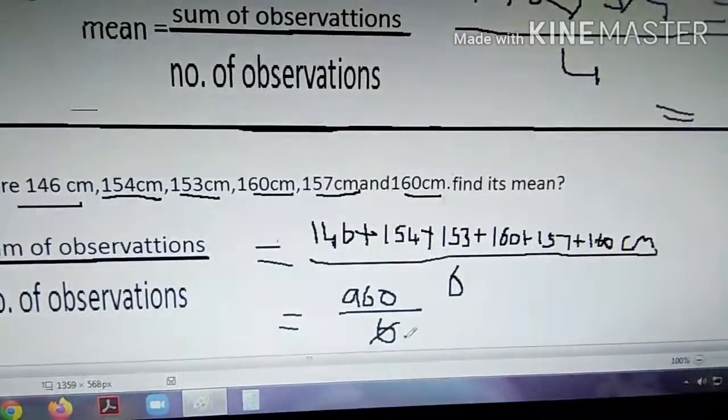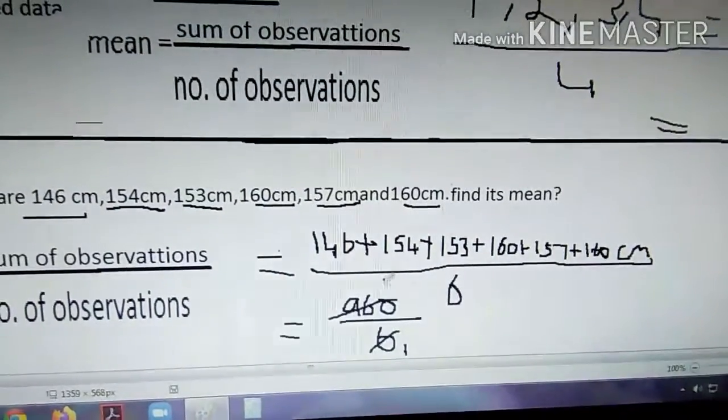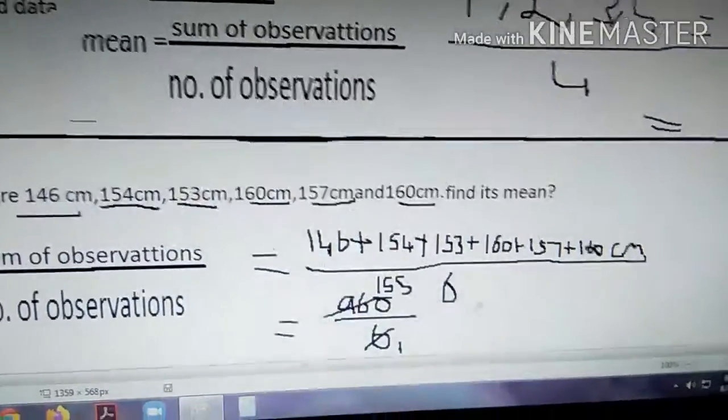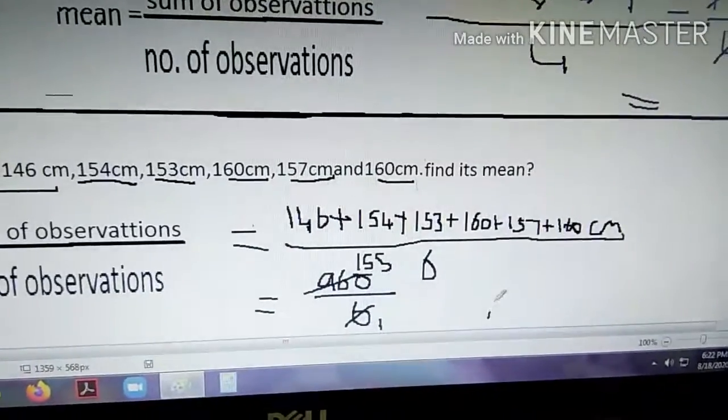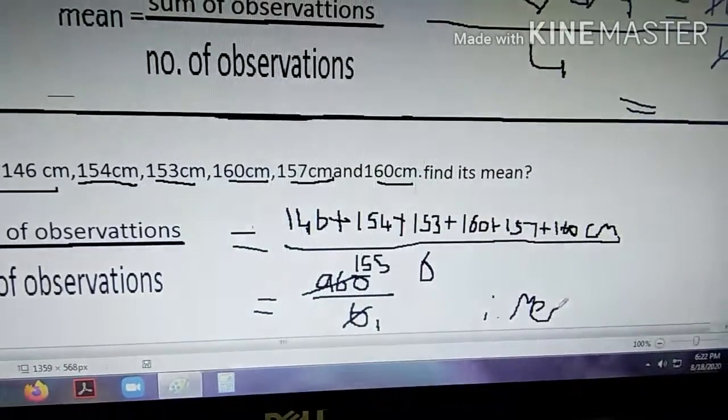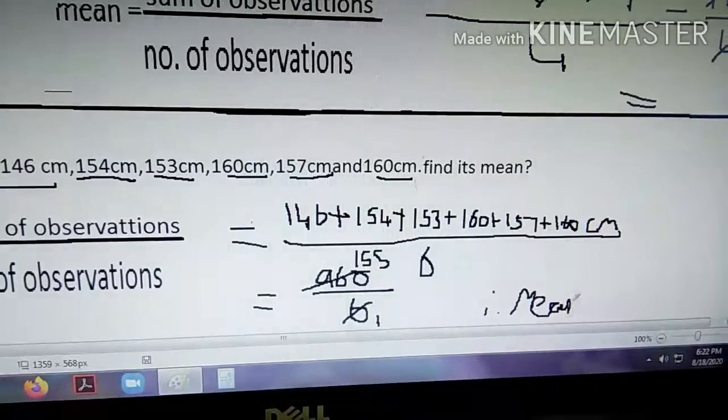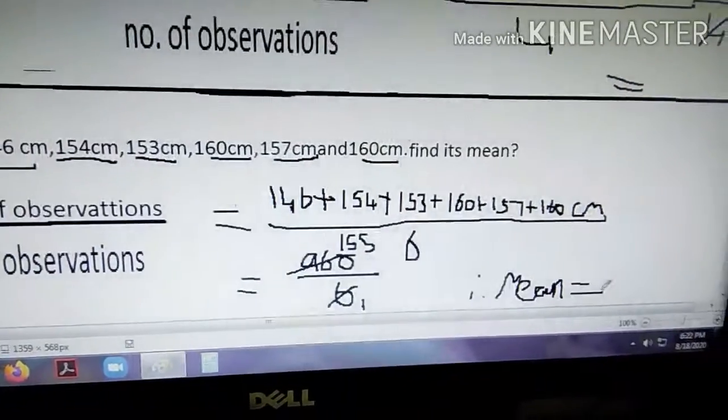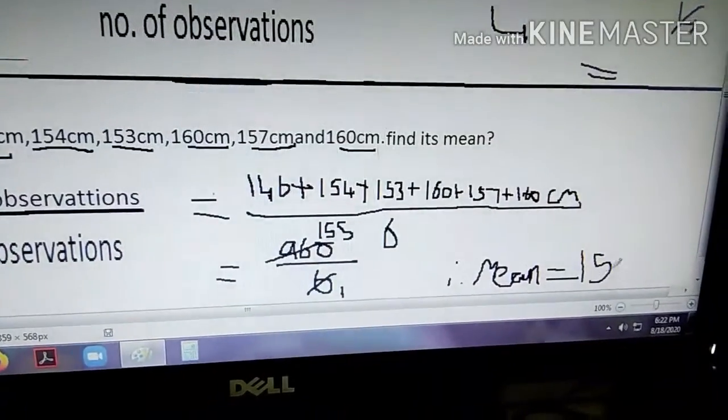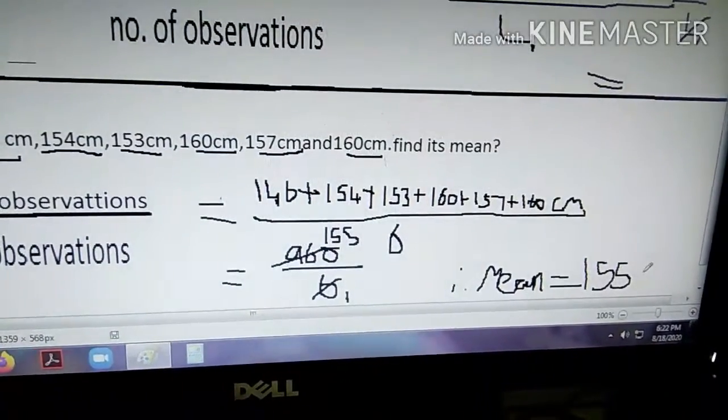6 into 960 goes 155 times. Which means, therefore, mean is equal to 155 cm.